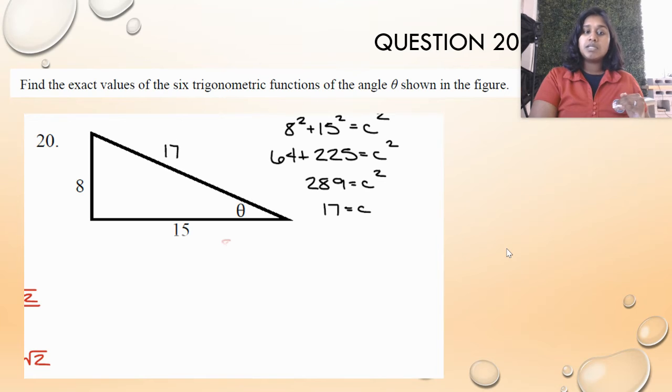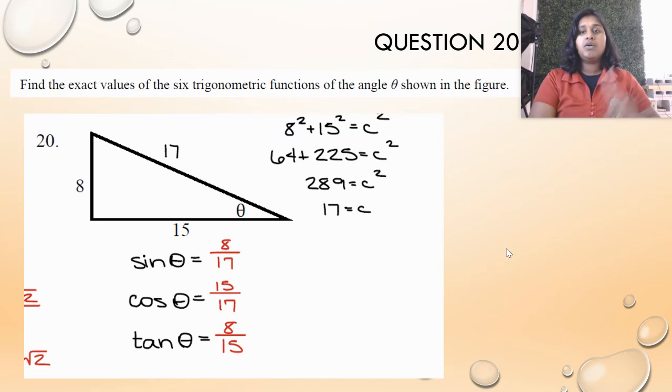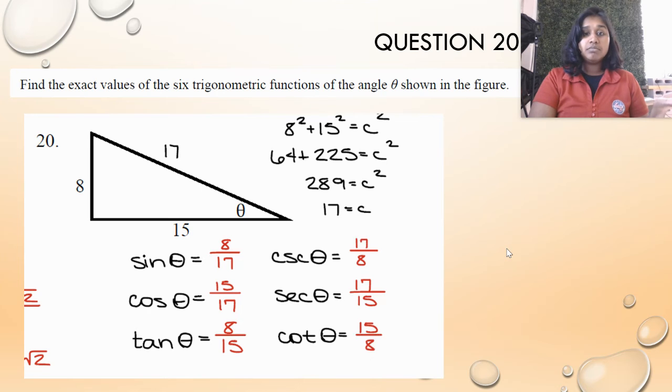Remember, we're using SOHCAHTOA, so sine is opposite over hypotenuse, cosine adjacent over hypotenuse. Tangent is just the opposite over the adjacent side. Ta-da! To do the last three, we do reciprocate. Boom. That's it.